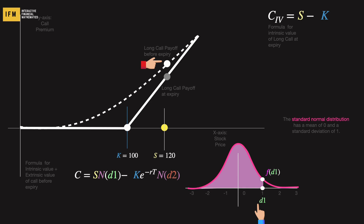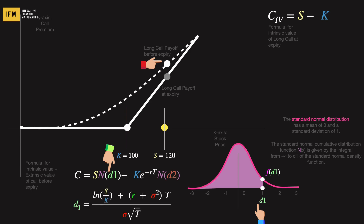N(d1) can be visualized as the area under the bell curve up to the point d1. Notice how this probability is multiplied by the stock price in the call price formula. The formula uses volatility, time, and interest rate to find the extrinsic value portion of the call. We will discuss the influence of d1 and what d1 represents in the upcoming slides.